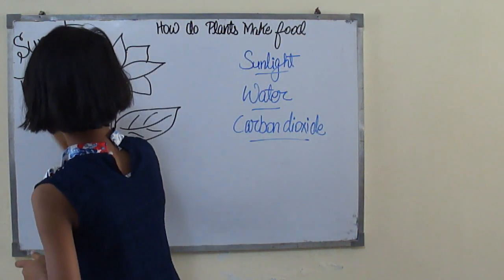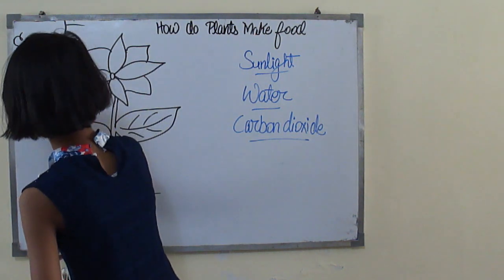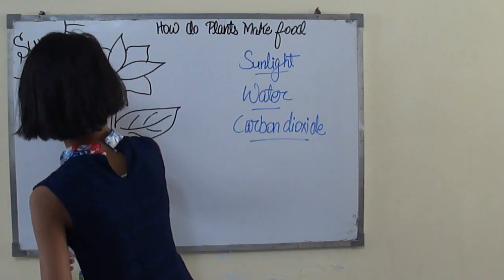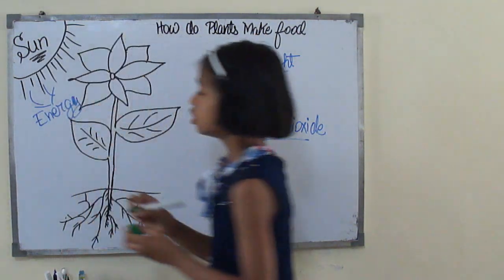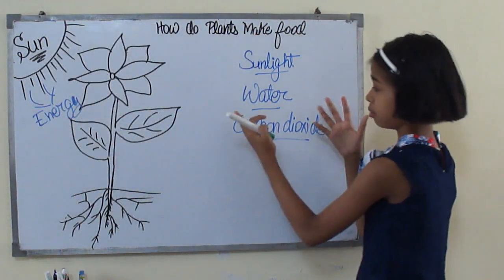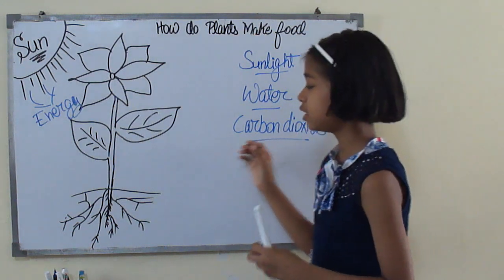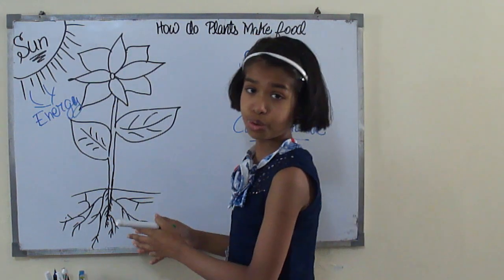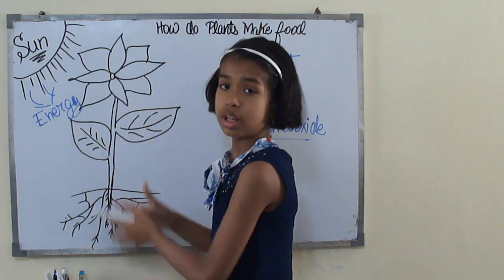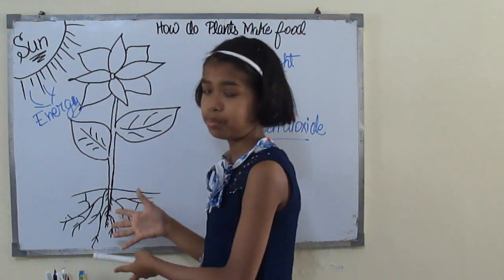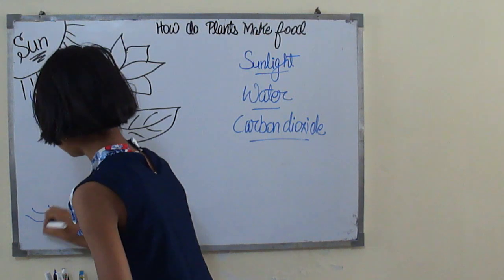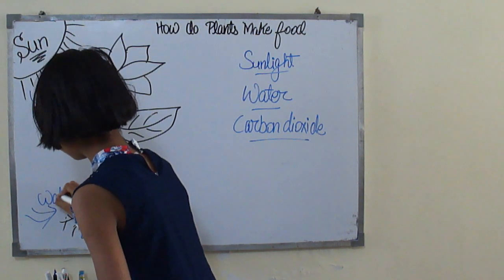Next, talking about water. Water is taken by the roots and then pushed up into the leaves and the other parts of the plant. So water is taken from the roots of the plant.